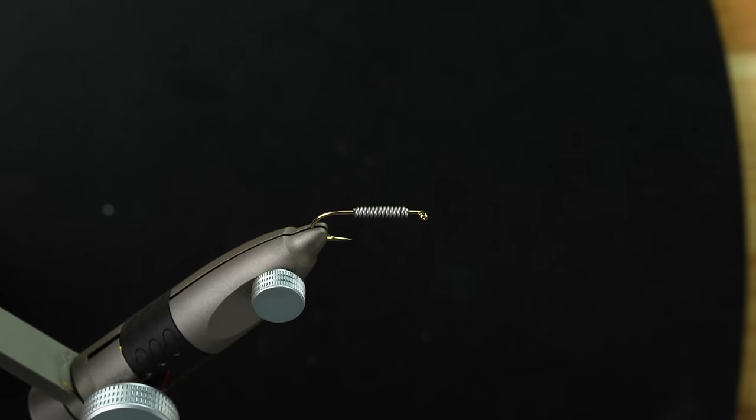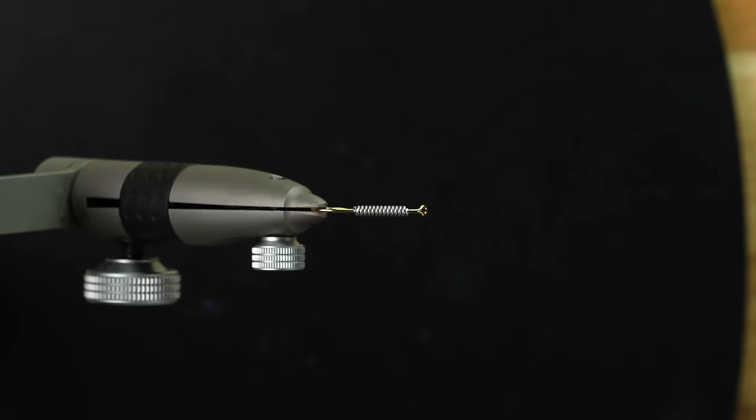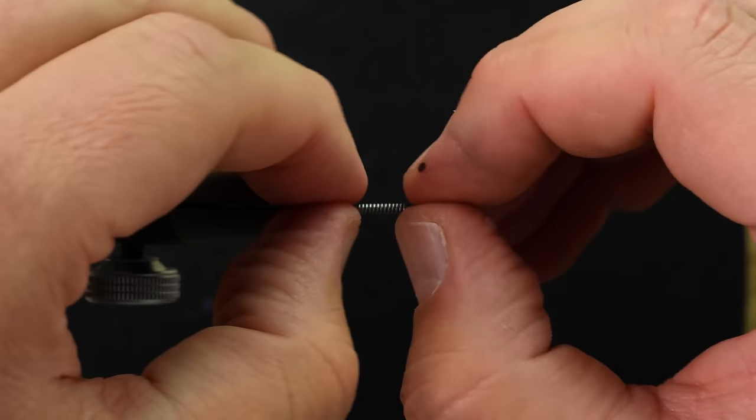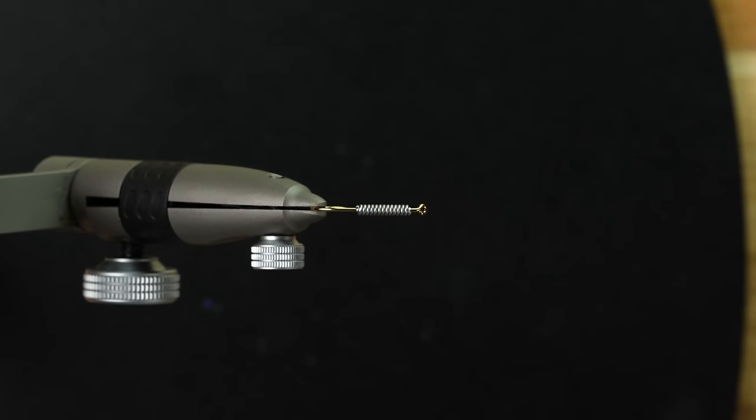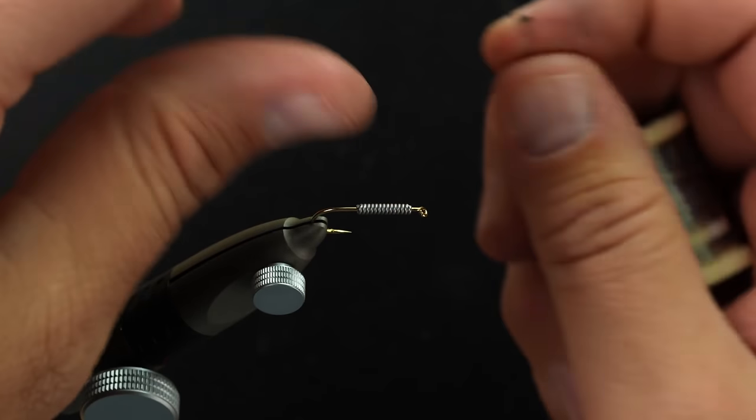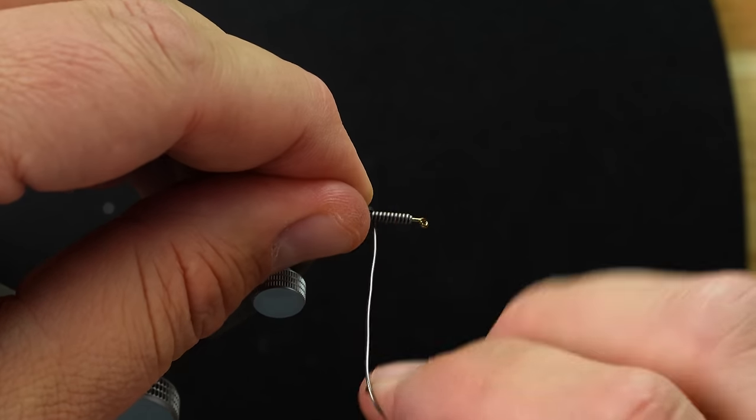Now, if you want to add extra weight to your lead, or extra weight to your fly, you can just take more lead and it can even be a smaller size and just wrap right over the top of that.